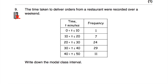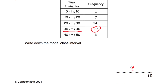Question number nine. The time taken to deliver orders from a restaurant is recorded over a weekend — again a grouped frequency table. We're asked to write down the modal class interval — the one with the highest frequency. The class interval with the highest frequency is: time greater than 30 minutes but less than or equal to 40 minutes. That's the modal class interval.